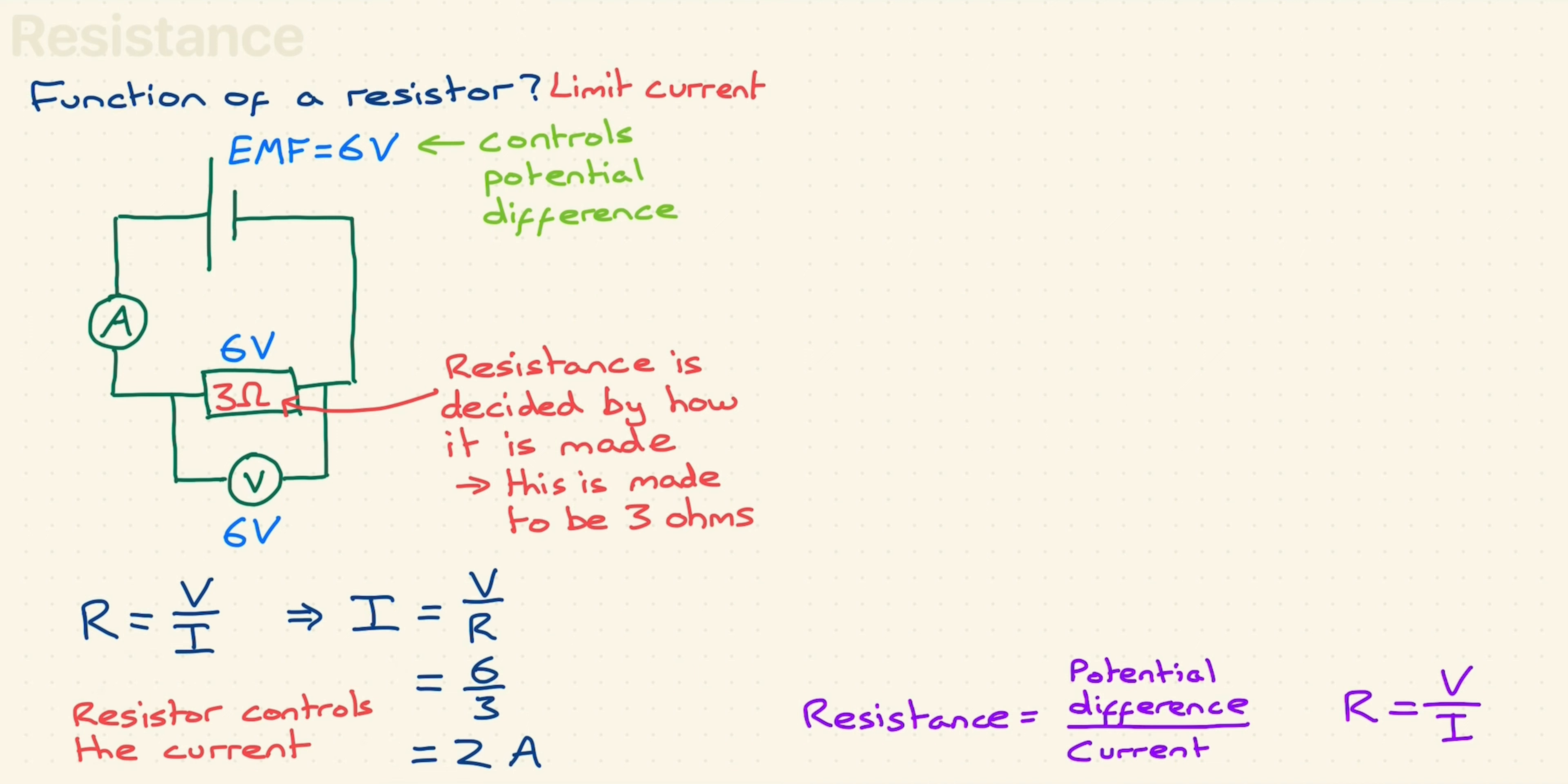Now we know that the resistance is controlled by how the resistor is made. What actually controls the resistance? There are 3 basic things we can control when we make a resistor: what it is made of, the material, its length, and its cross sectional area. In other words, we're controlling the material and the volume.